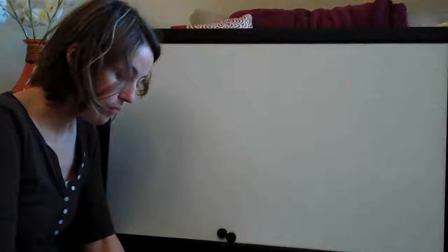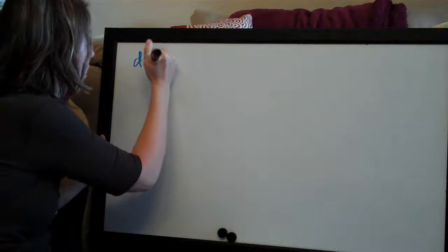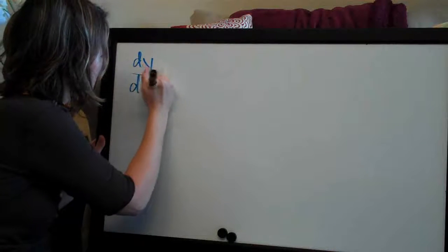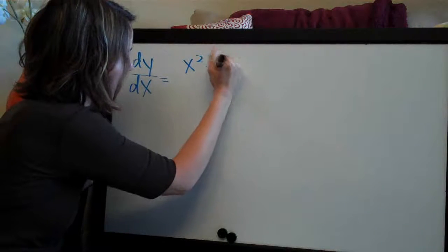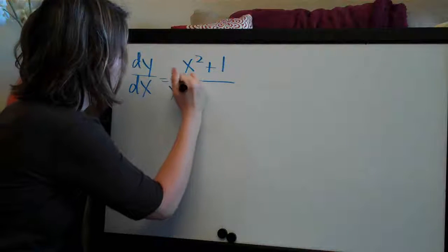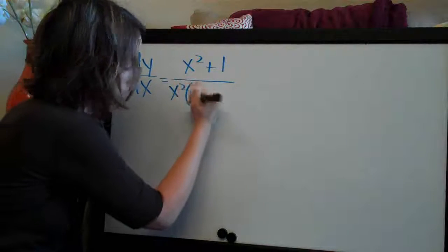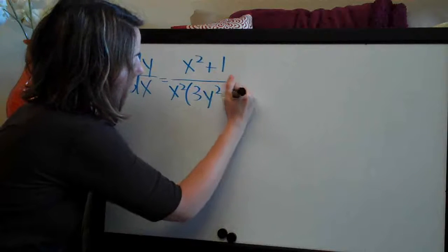Hey everyone, welcome back! We're going to do another differential equation problem. This one is a separable equation: dy/dx equals x squared plus 1, over x squared times 3y squared plus 1.